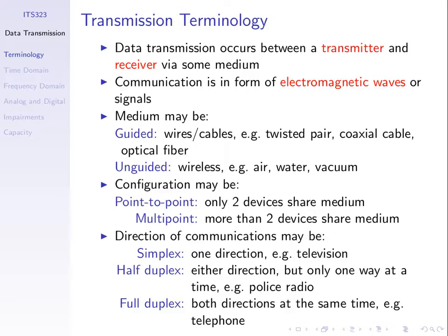Handheld radios — sometimes called CB radios or private radios — are an example where you press a button to talk. You press the button, talk, the other person hears and listens, then you release the button, and then they press the button and talk back to you. So we can communicate in both directions, but only one person at a time. That's half-duplex.